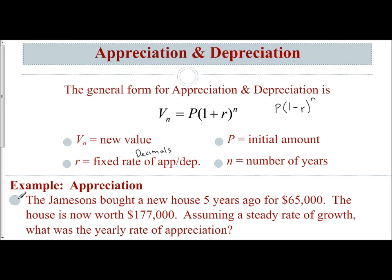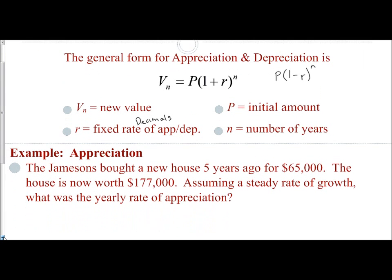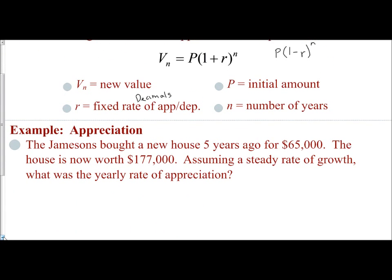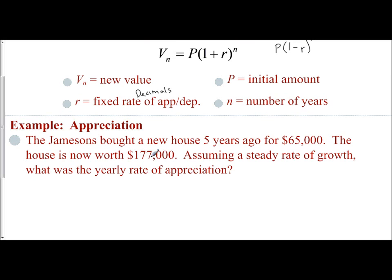Let's look at this example. The Jamesons bought a new house five years ago for $65,000. The house is now worth $177,000, assuming a steady rate of growth. What was the yearly rate of appreciation? Let's label what we know. V sub n, our new value, is $177,000. P was the initial amount, the principal amount, which started out at $65,000.